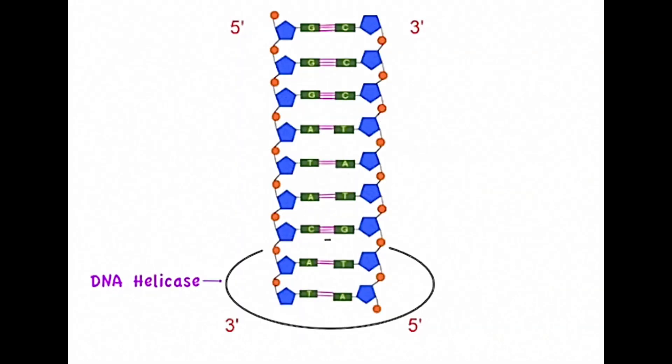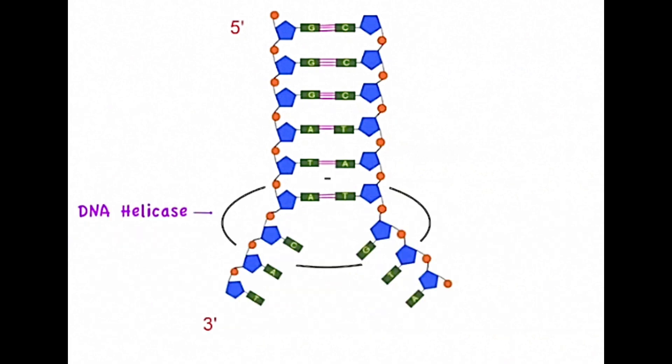The leading strand is the strand on the left-hand side which goes from 3' at the bottom to 5' at the top. First of all the enzyme DNA helicase unwinds and separates the strands by breaking the hydrogen bonds between the complementary base pairs.